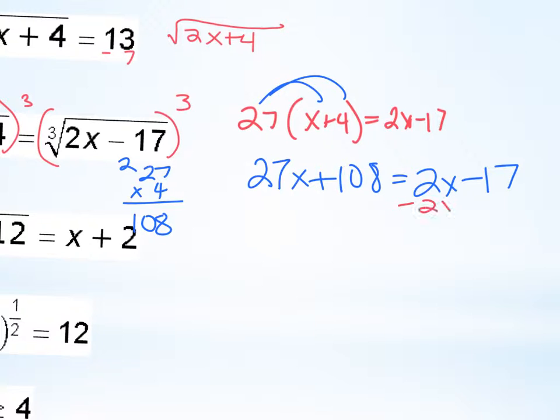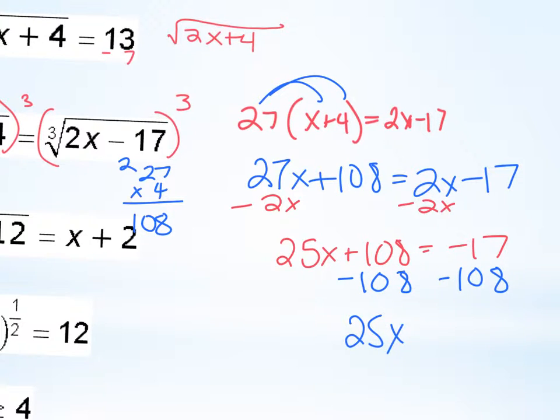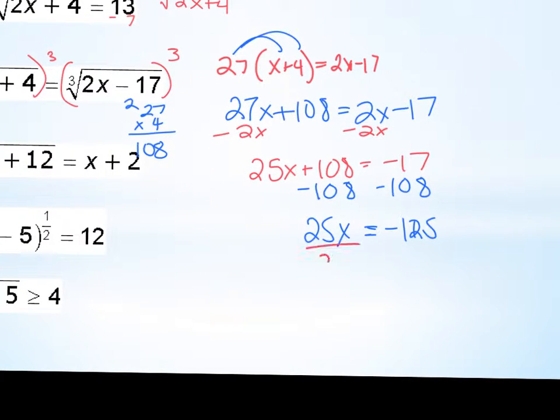So I'm going to move both sides to the same side, so I'm going to subtract the 2X from the 27. And then subtract, so I'm going to add negative 125. And then divide both sides by 25. And how many times is 25 going to 125? So negative 5 times.